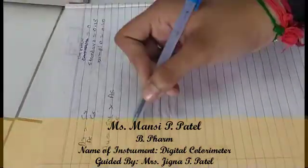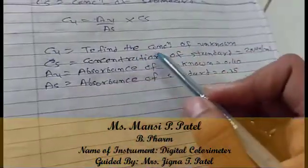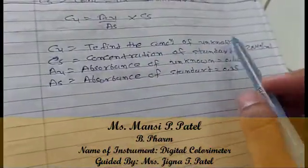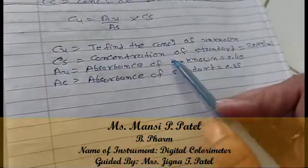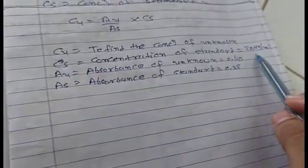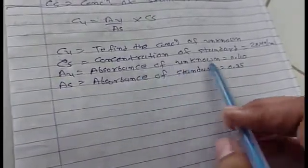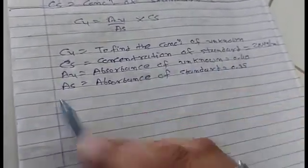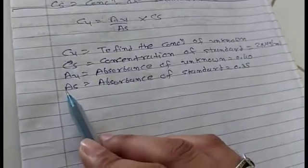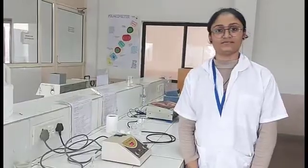Put the reading into this equation. Cu is equal to the concentration of unknown. Cs is the concentration of the standard, equal to 20 micrograms per mL. Au is the absorbance of unknown, equal to 0.14. As is the absorbance of standard, equal to 0.35. If you like this, please like, share, and subscribe to our YouTube channel.